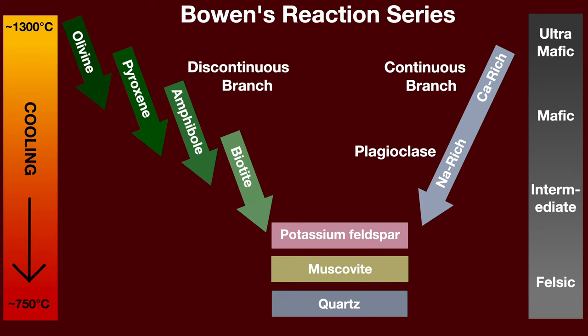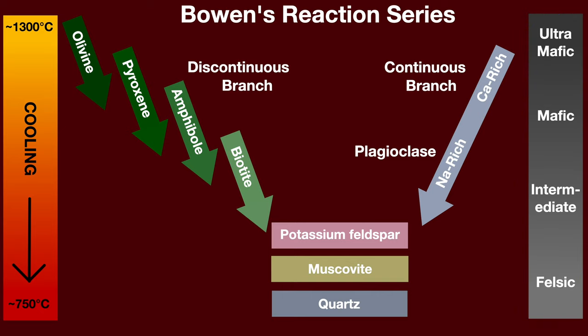We better spend a few minutes talking about Bowen's reaction series, because in my opinion this diagram is probably one of the most important diagrams in introductory geology — at least in the top five. Before we talk about what's happening, let's look at the scales on either side. On the left-hand side you see a scale for temperature: about 1300 degrees Celsius at the top and about 750 degrees Celsius at the bottom. On the far right, you see a scale for essentially bulk mineral composition. Remember that mafic means a mineral or rock is rich in magnesium or iron, while felsic means a rock or mineral is rich in silica. Now we have a discontinuous branch and a continuous branch.